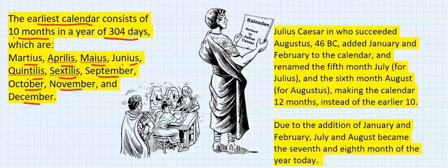Julius Caesar, who succeeded Augustus in 46 BC, added January and February to the calendar and renamed the fifth month July for Julius, his name, and the sixth month August.